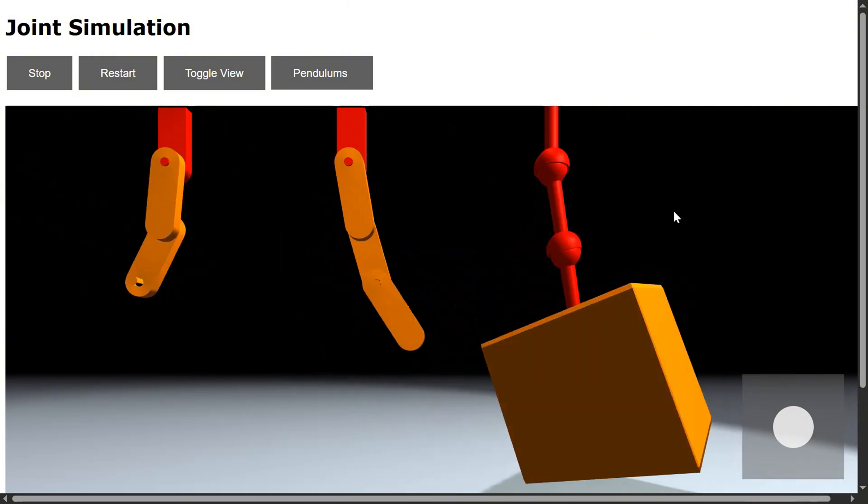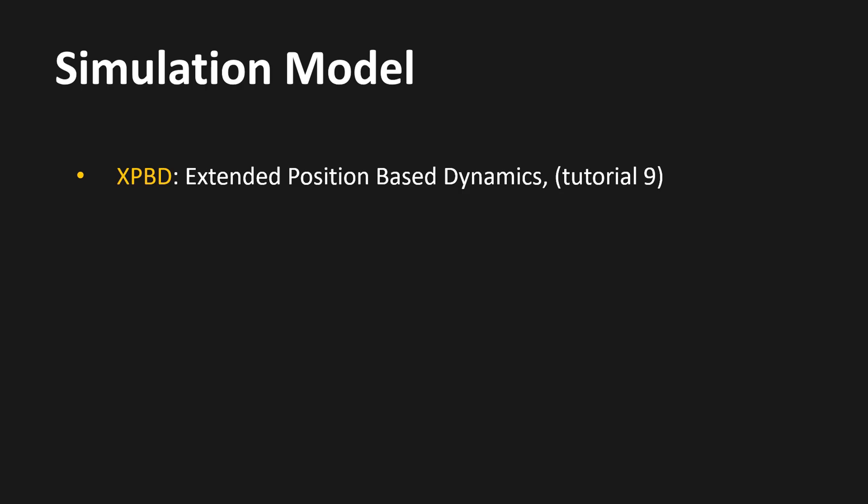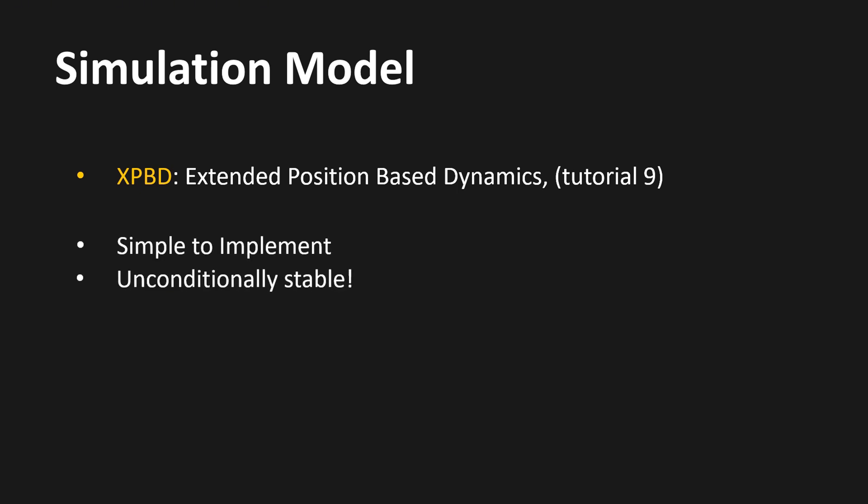Now let me show you how joint simulation works. We will employ extended position-based dynamics, which I introduced in tutorial number 9. This method is very simple to implement and unconditionally stable — meaning it never blows up, even for infinite stiffnesses — which makes it well suited for interactive applications. Unlike the original position-based dynamics method, extended position-based dynamics is physically based, and it lets us handle true physical quantities like forces, torques, and stiffnesses with high fidelity.